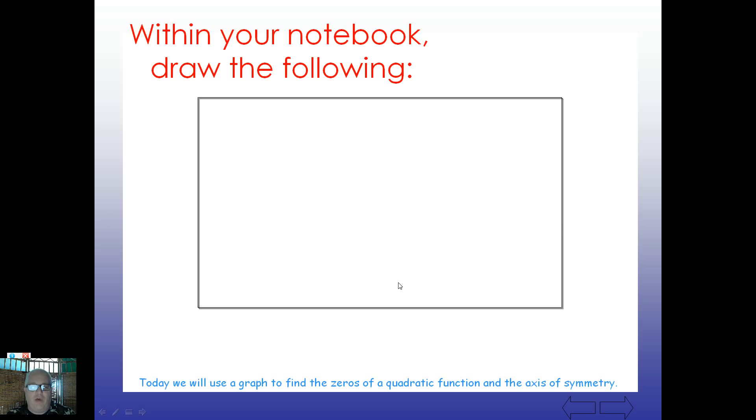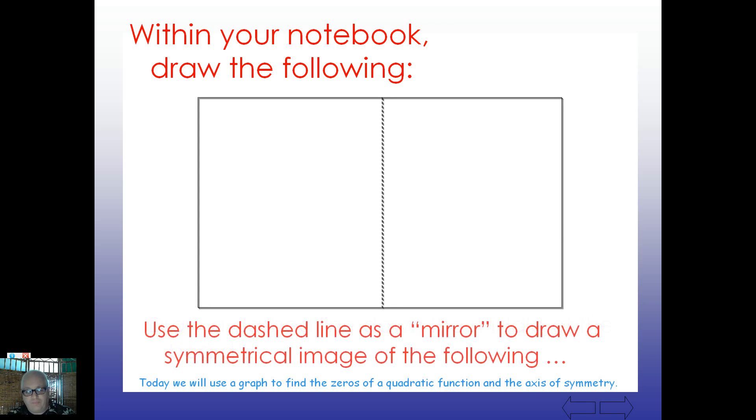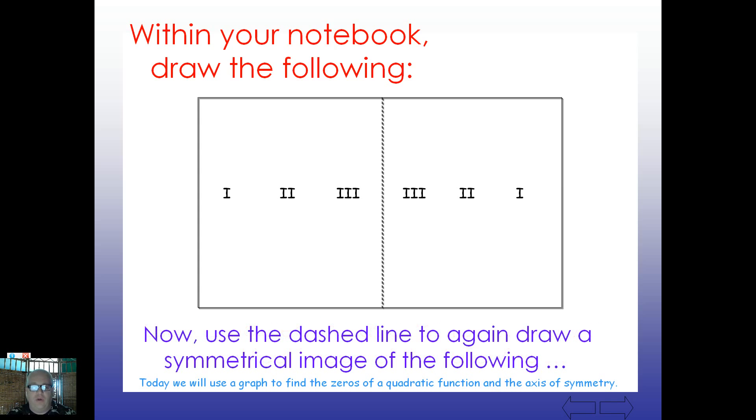So in your notebook, how about you draw the following? What do you think the axis of symmetry might be here? Actually, I've drawn the axis of symmetry, sorry. On the left-hand side, use the dashed line as a mirror to draw the symmetrical image of the following. What do you think would be the image of this? So take a look at that and maybe if you want to take a second and write that down. What do you think, if you were to mirror that over, what would it look like? So you've got the Roman numeral 1, the Roman numeral 2, the Roman numeral 3.